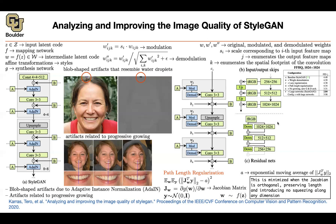In terms of quantitative metrics, you look at Fréchet Inception Distance. Weight demodulation, path length regularization, and no progressive growing all contribute — and all of them are helping. At the same time, larger neural networks also help; scaling up the network improves results.